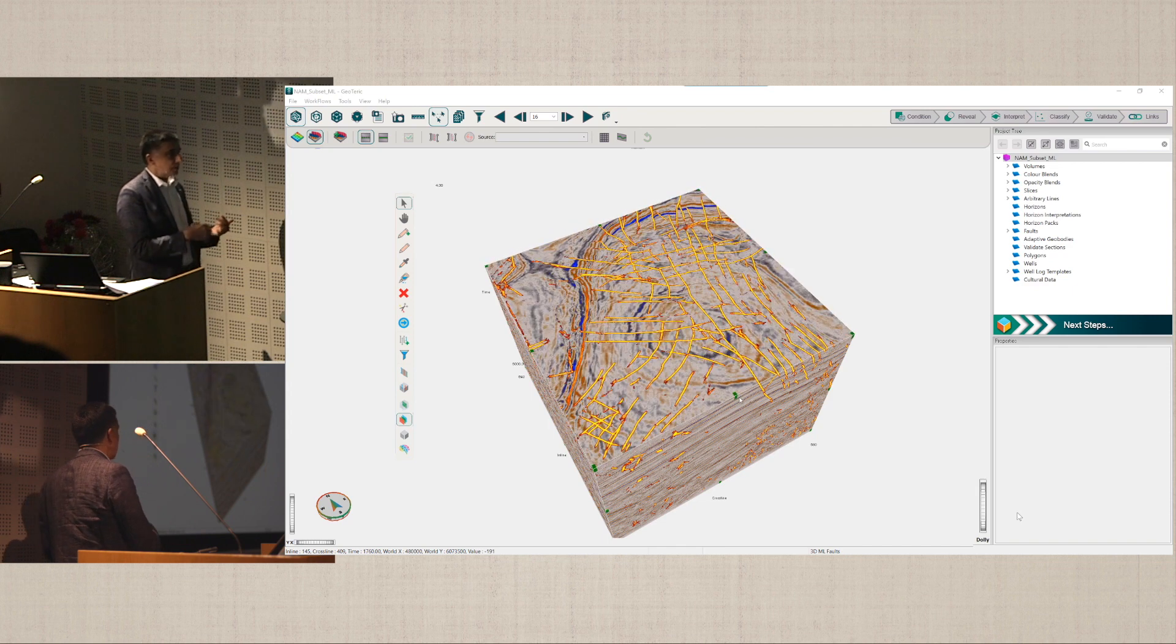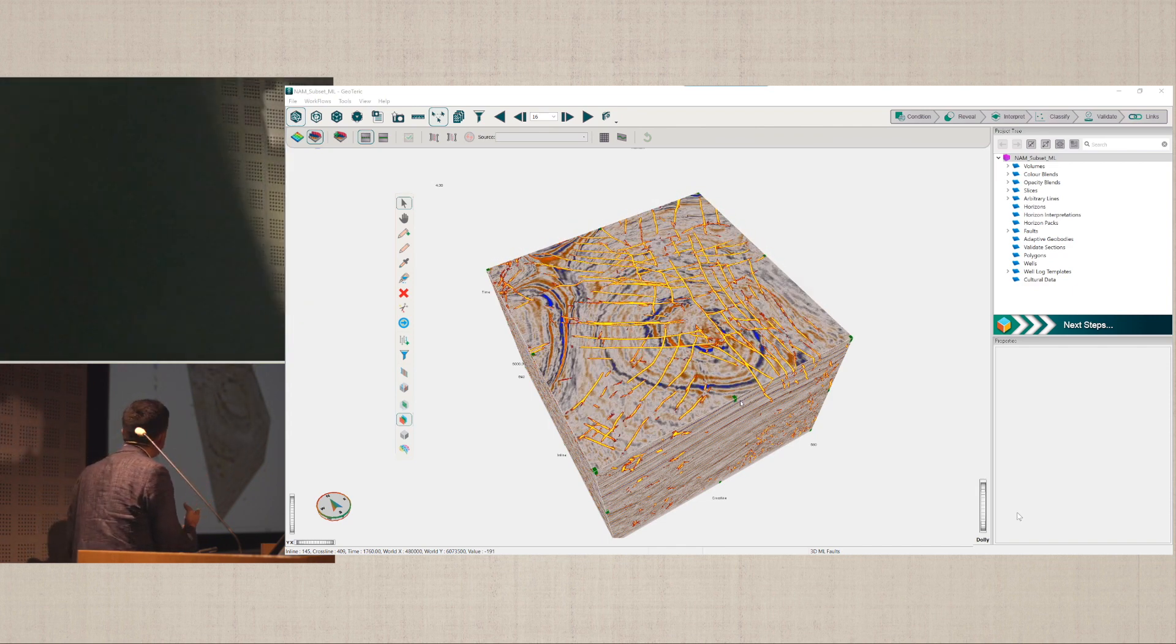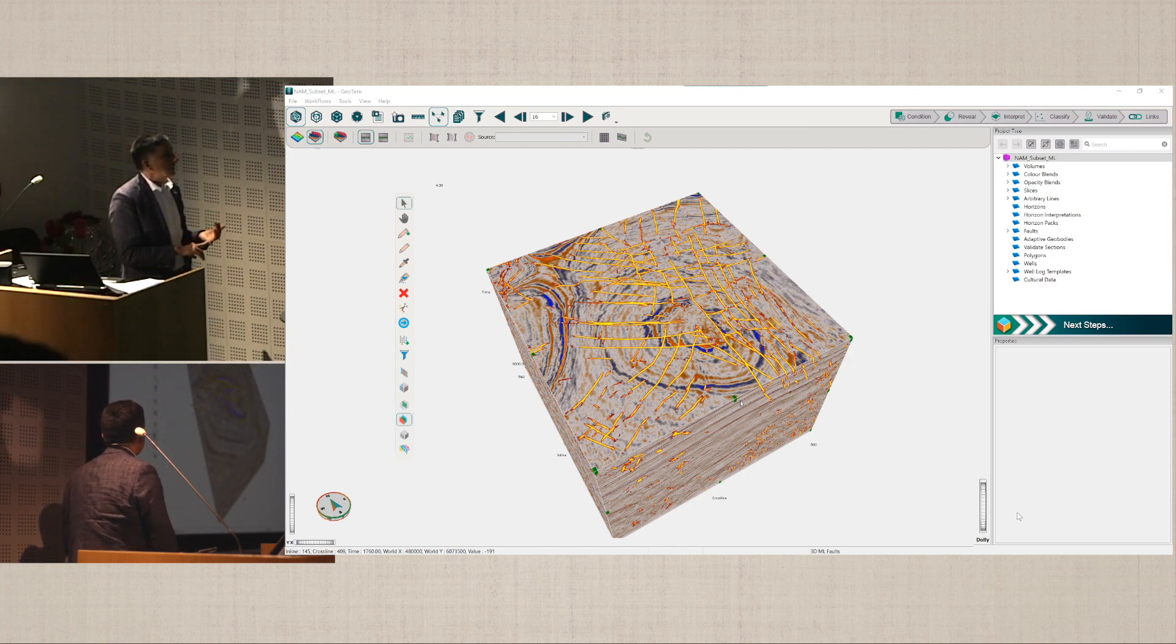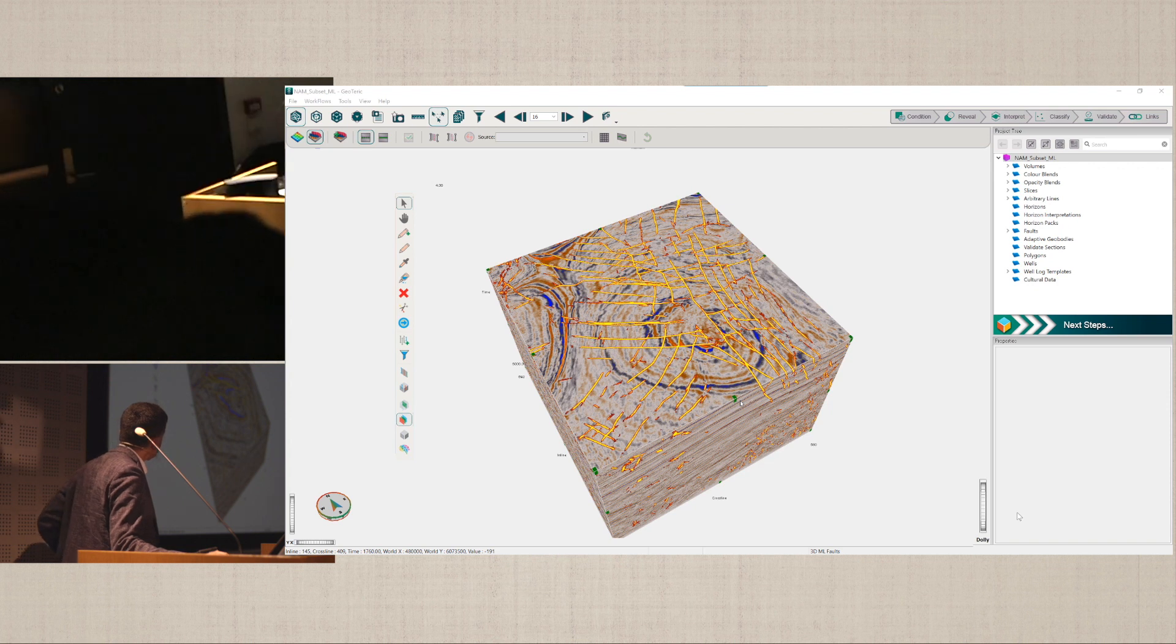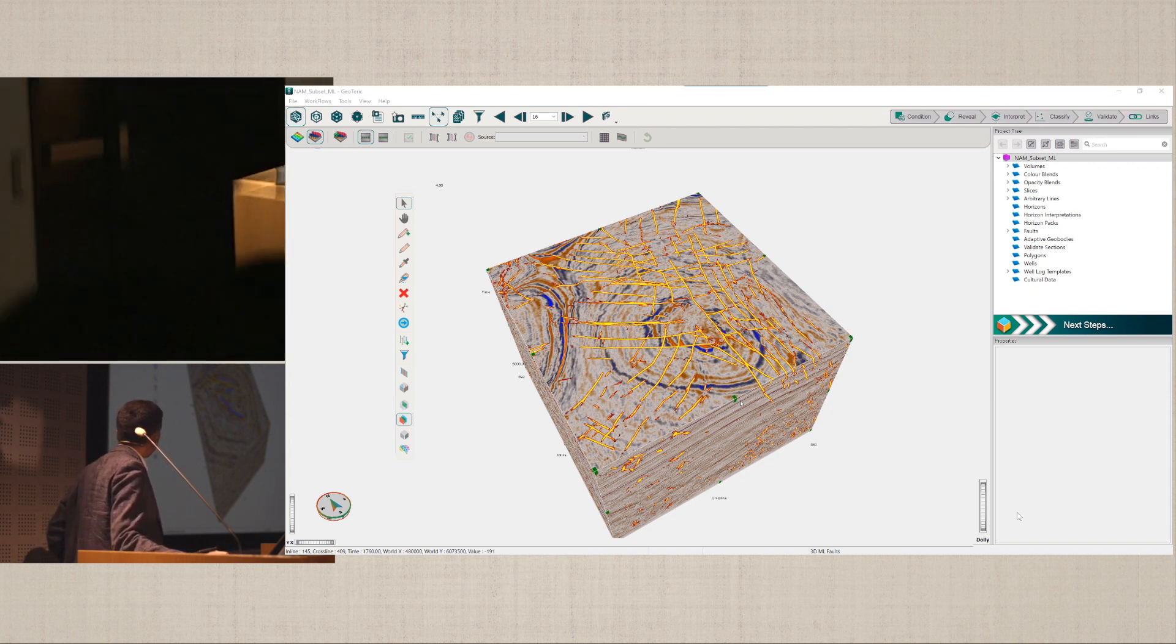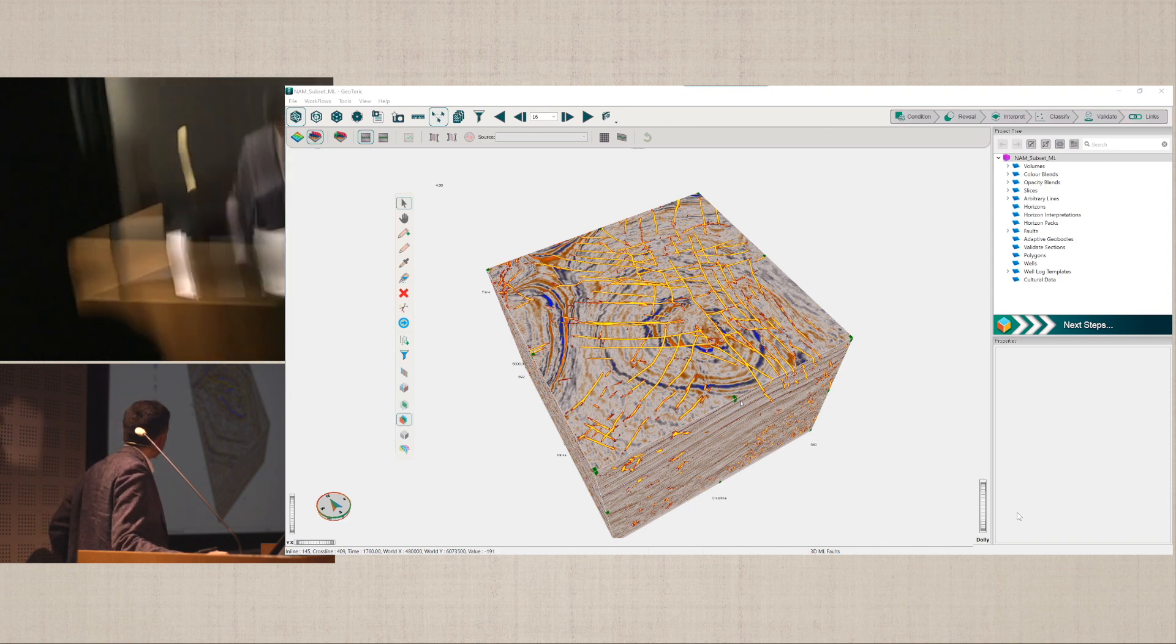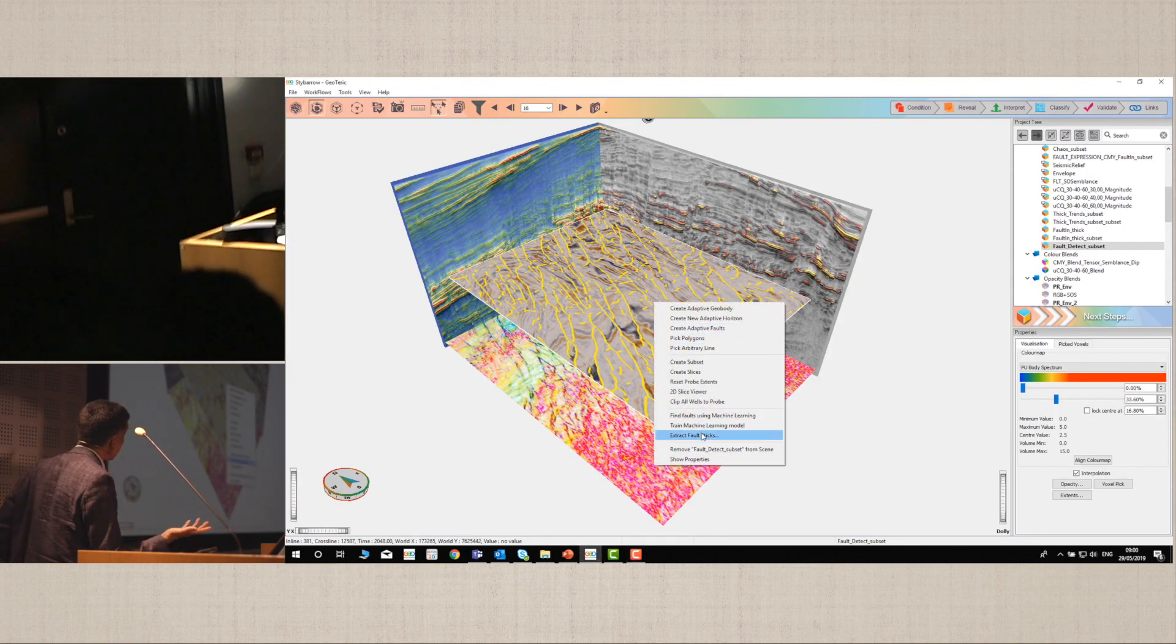We can compare the data, compare the seismic to these indications, fault indications. This is a dataset from the Dutch part of the North Sea, and our structural geologist compared the AI results to his own interpretation and said that it was all right.